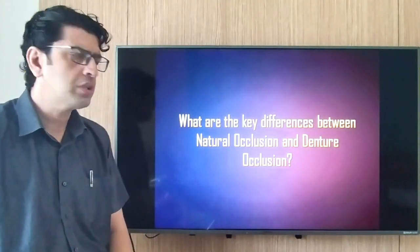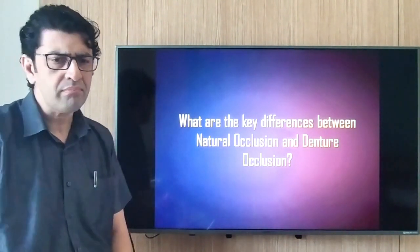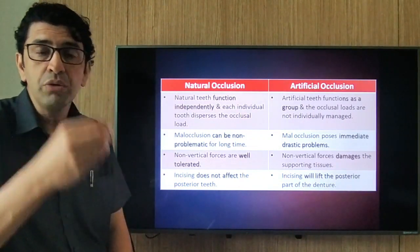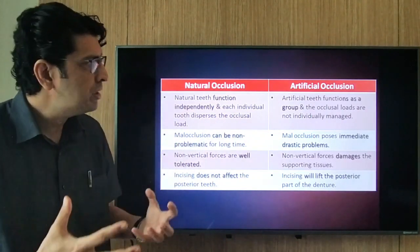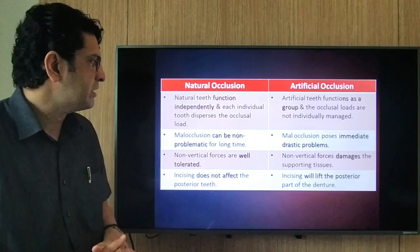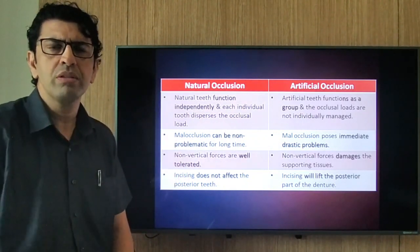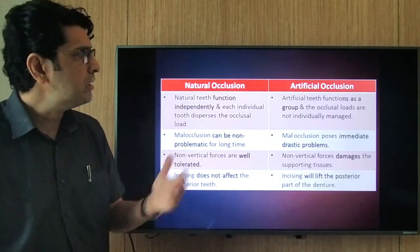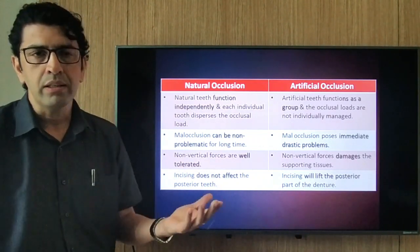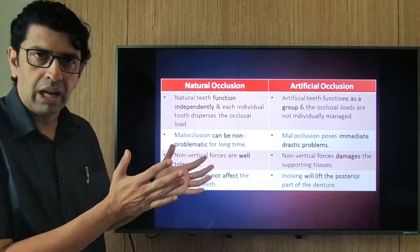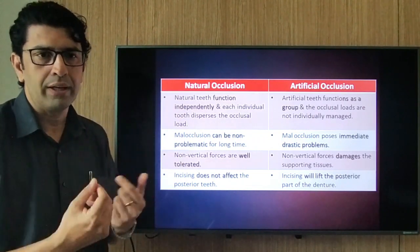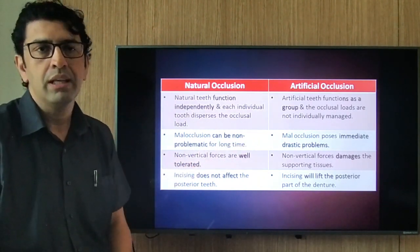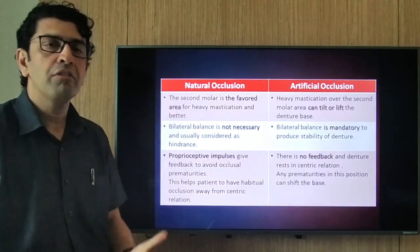Key differences between natural and denture occlusion include: natural teeth function independently, each dispersing occlusal load individually, while artificial teeth function as a group. Malocclusion is not very problematic in natural teeth but poses an immediate and drastic threat in dentures. Non-vertical forces are well tolerated by natural teeth but damage supporting tissue quickly in dentures. Incising does not affect posterior teeth naturally, but in dentures it will lift the posterior part, creating instability. The second molar is a favored area for heavy mastication in natural teeth.